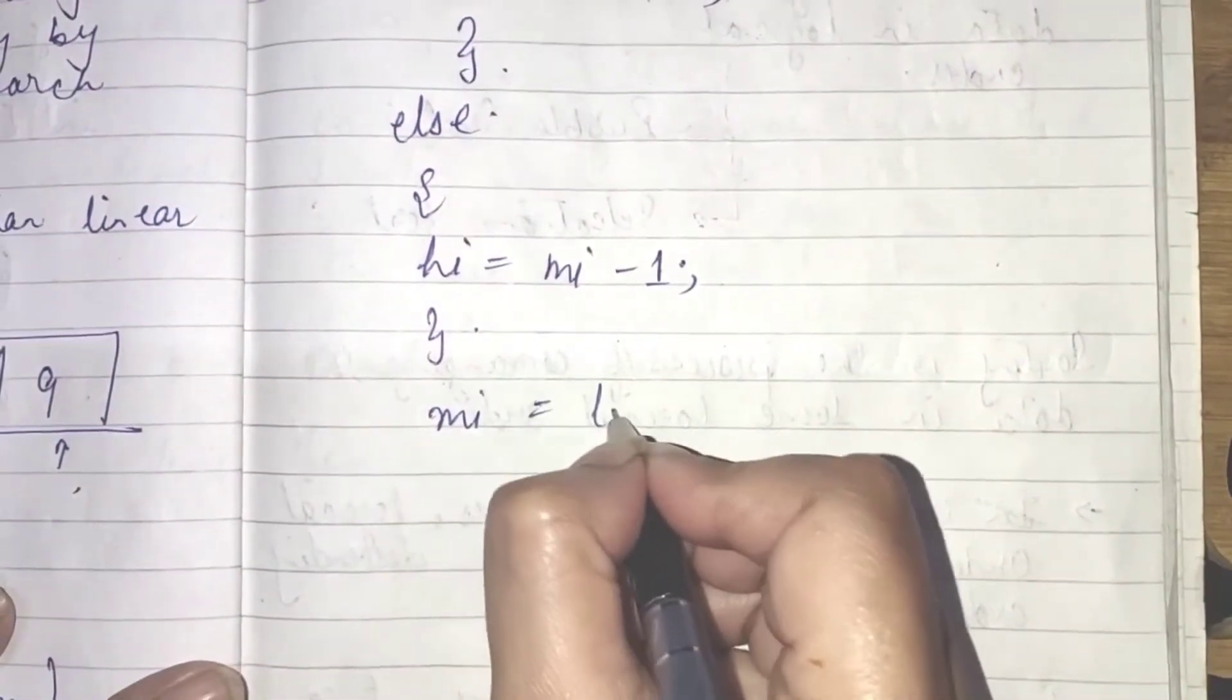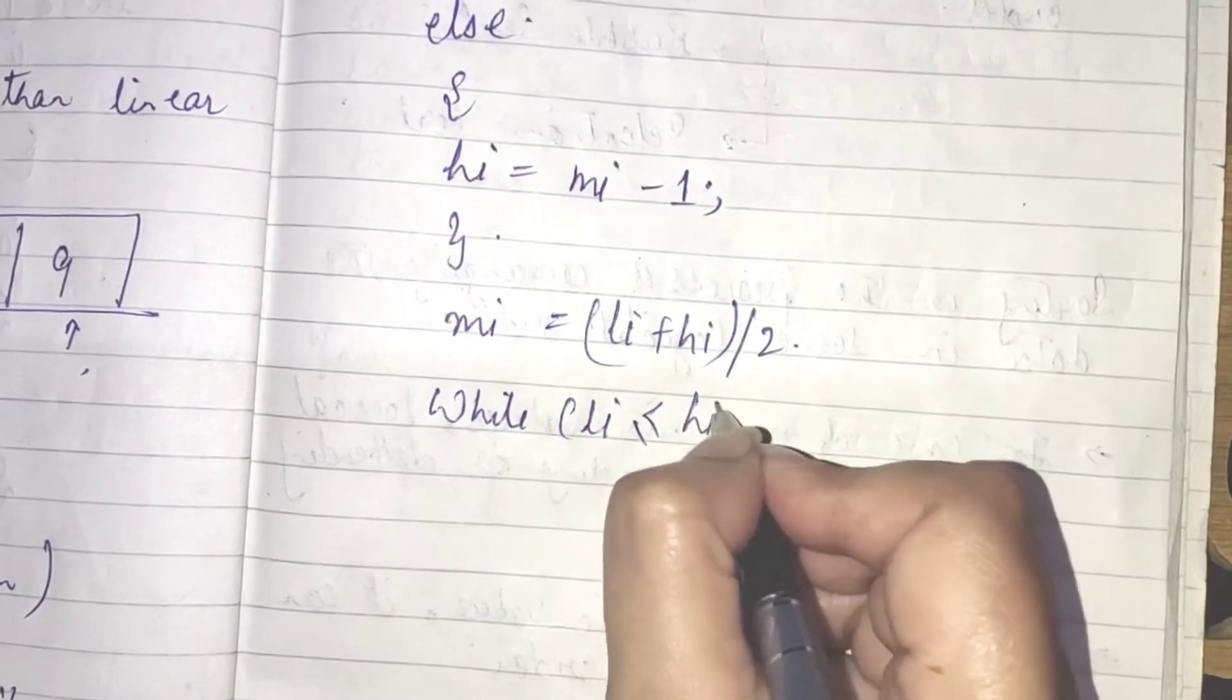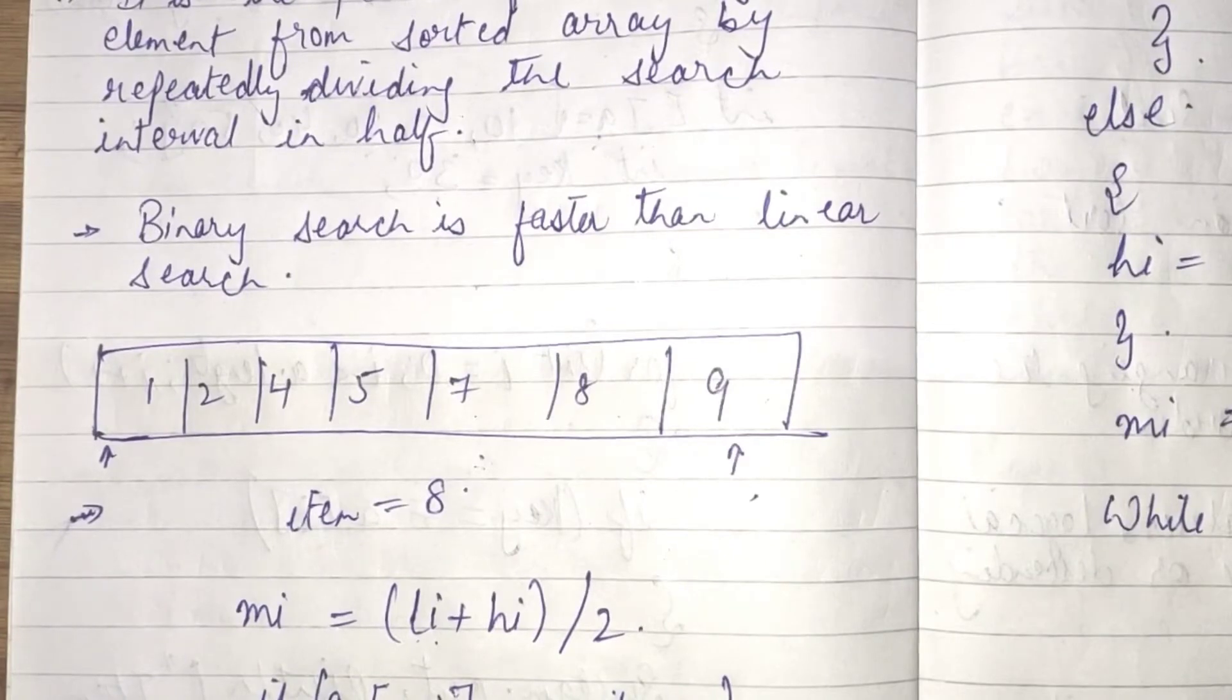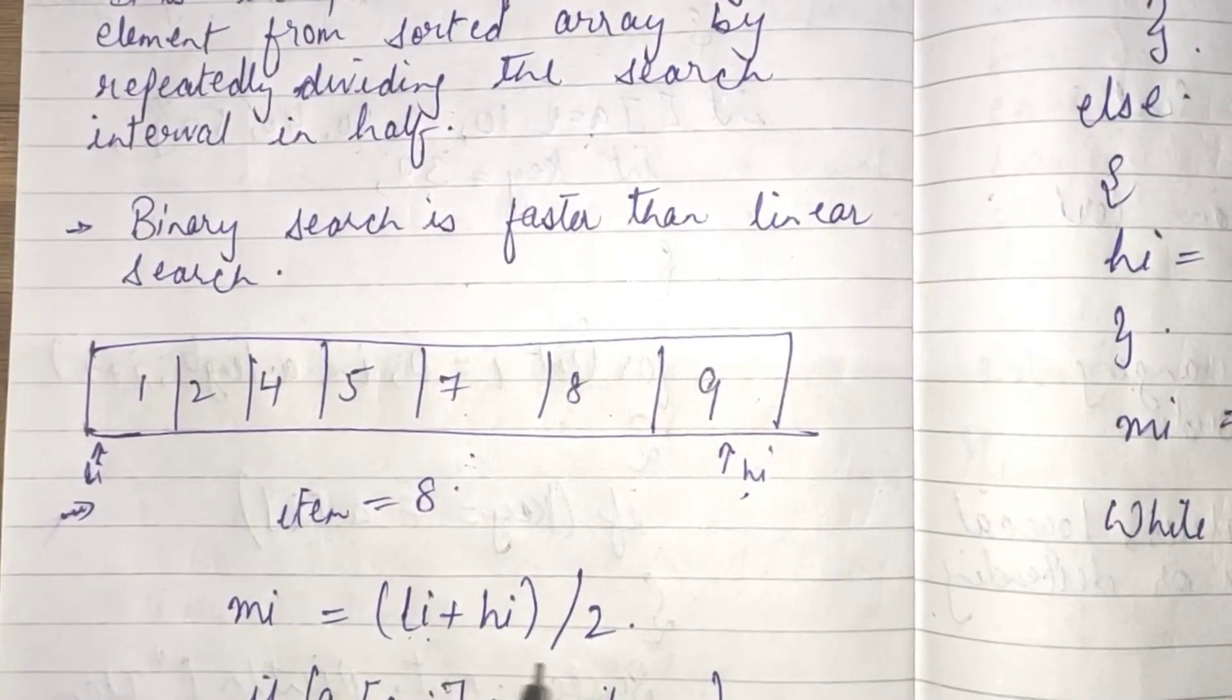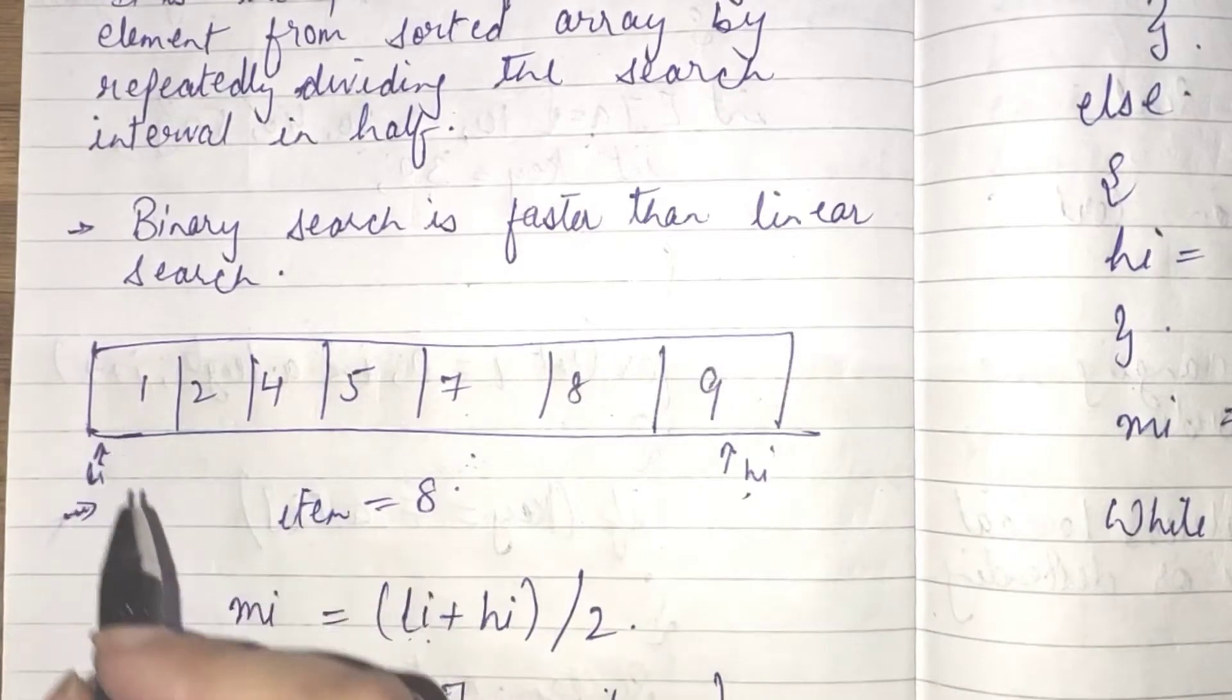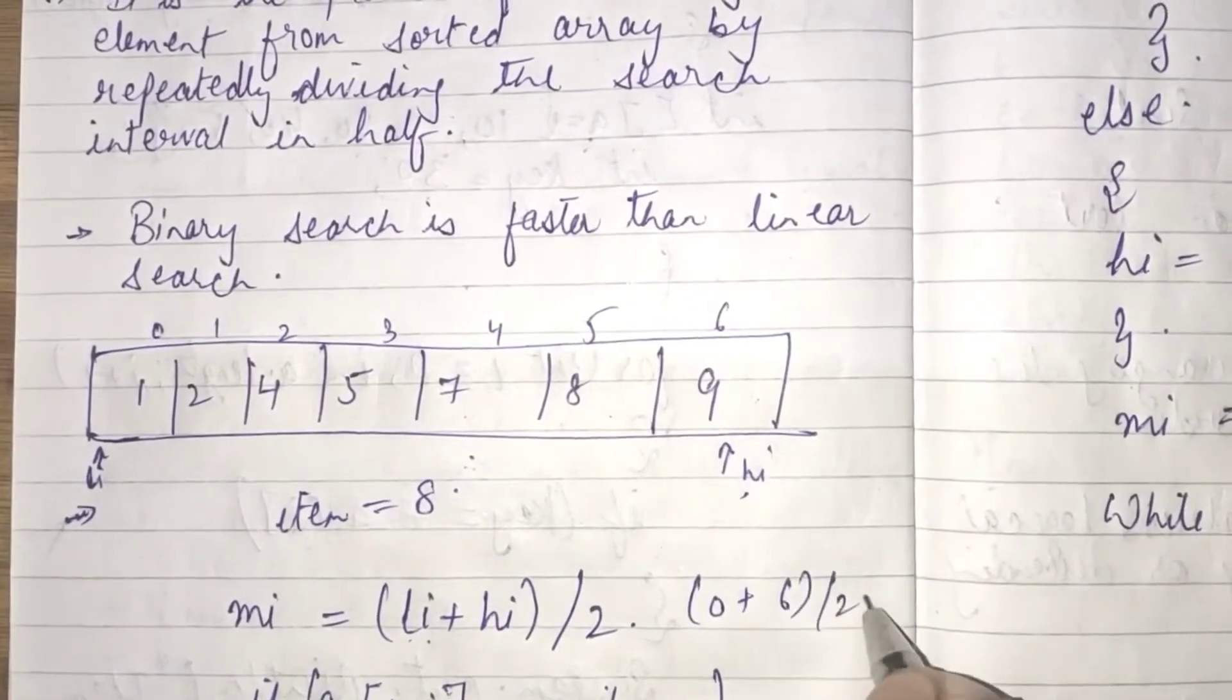MI equal to LI plus HI divided by 2 while LI is equal to HI. Now, here, what actually I am doing, according to the list, firstly we said that we have to find the middle value. This is your lowest value and this is your highest value. To find the middle value, what we have to do, we have to add the lowest value and the highest value. Let's write the location also 0, 1, 2, 3, 4, 5, 6. Now, here it will be considered as 0 plus 6 divided by 2. So, that will be 3.